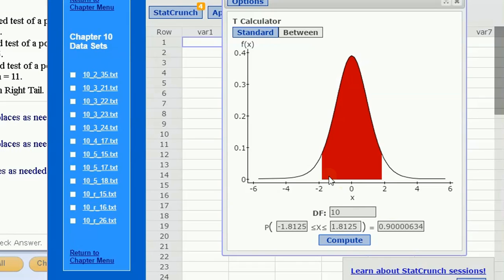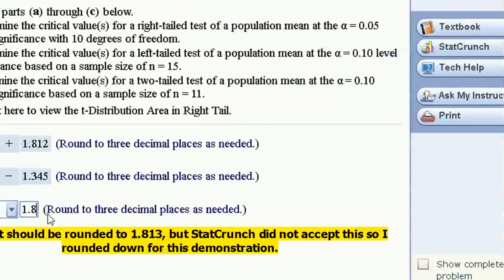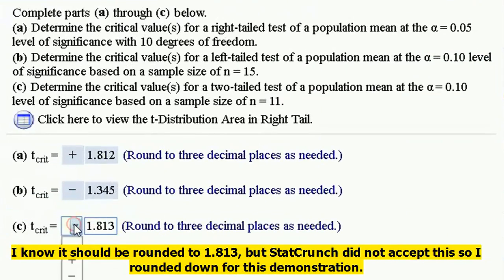And my sample size of 11 tells me the degrees of freedom is going to be 10. You click Compute and you're going to get your cutoffs. This is great. It's 1.8125. That's 1.813. This requires me to put plus or minus 1.813.